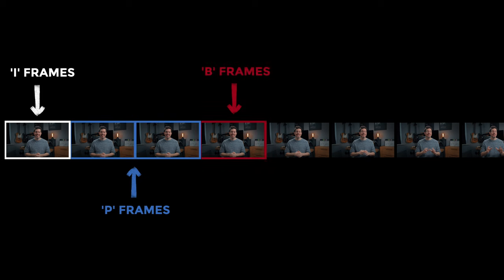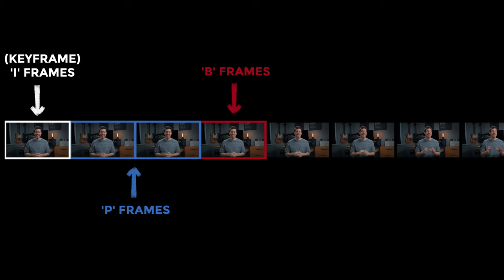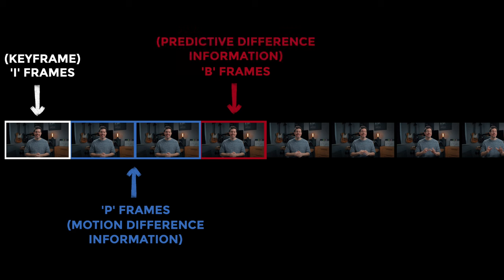If we zoom in and take a closer look, we can see how long GOP works. This codec contains I frames, P frames, and B frames — which is why long GOP is also sometimes referred to as IPB. The I frame is our key frame and all the information from that one is captured. P frames look for differences in motion from frame to frame, and B frames look at motion in the previous frames and try to predict what's coming. I'm keeping this in layman's terms and not going into super technical nitty-gritty.